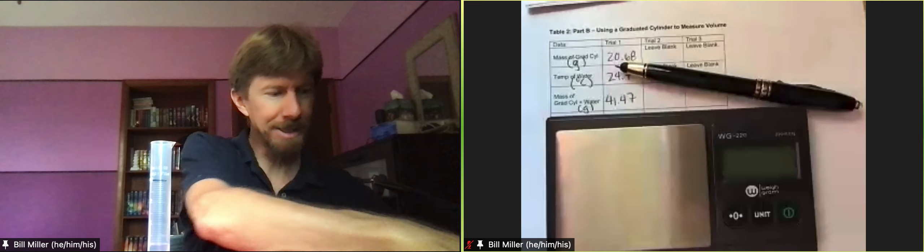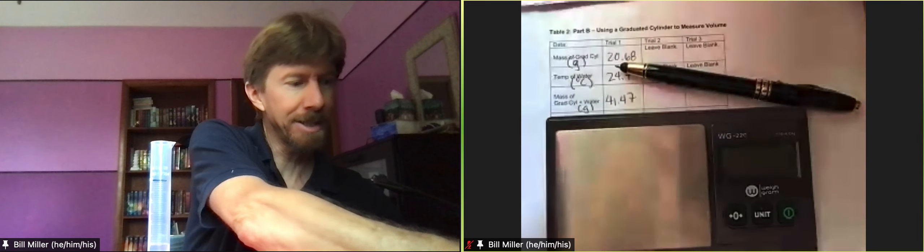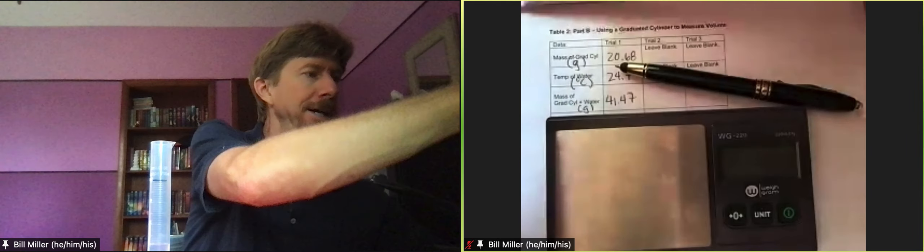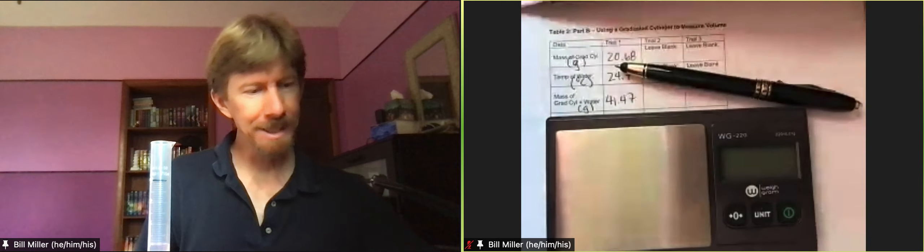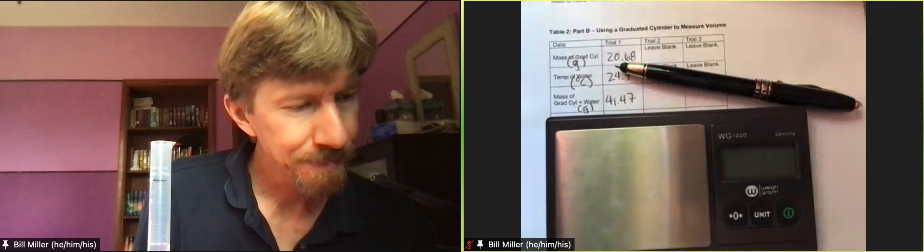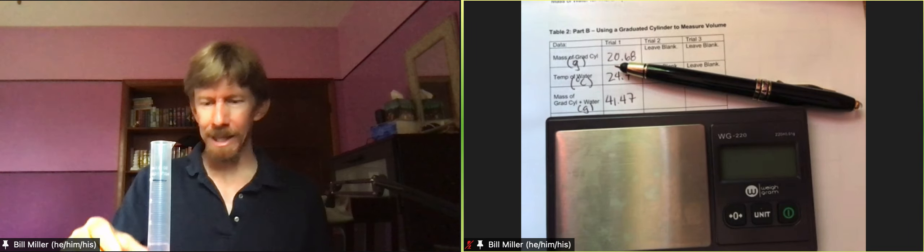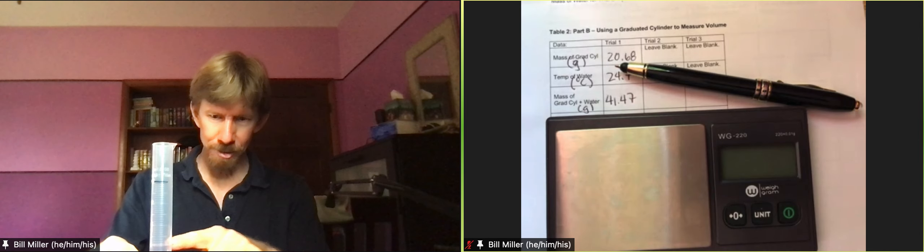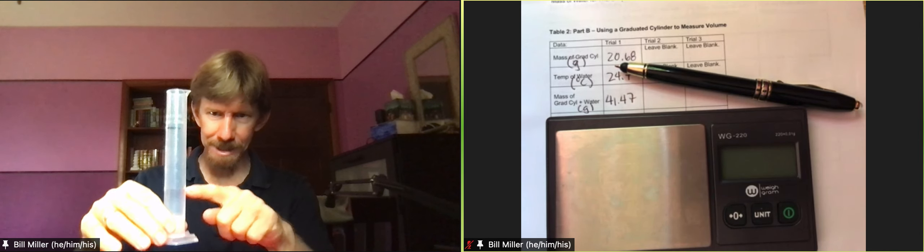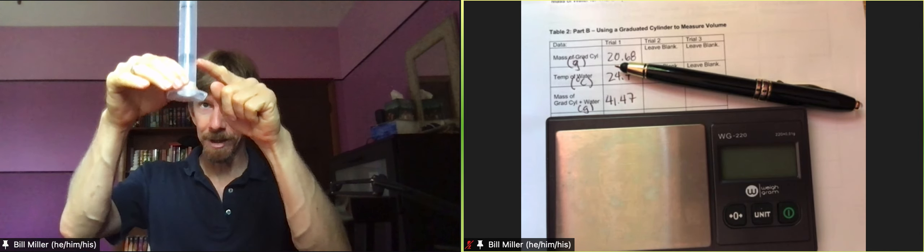It talks about the meniscus too, so please read over these as you go through the lab. It talks about the meniscus. Take a picture of the meniscus in the graduated cylinder. That means you're going to want a picture looking straight across at the meniscus, which is this interface.